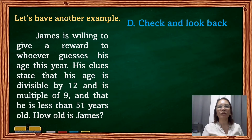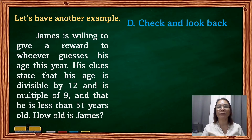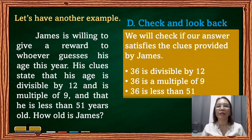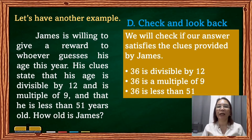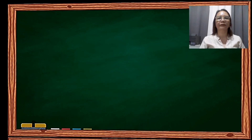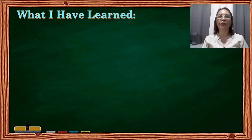The last step is check and look back. We check if our answer satisfies all the clues: 36 is divisible by 12 ✓, 36 is a multiple of 9 ✓, and 36 is less than 51 ✓. Therefore, James is 36 years old.